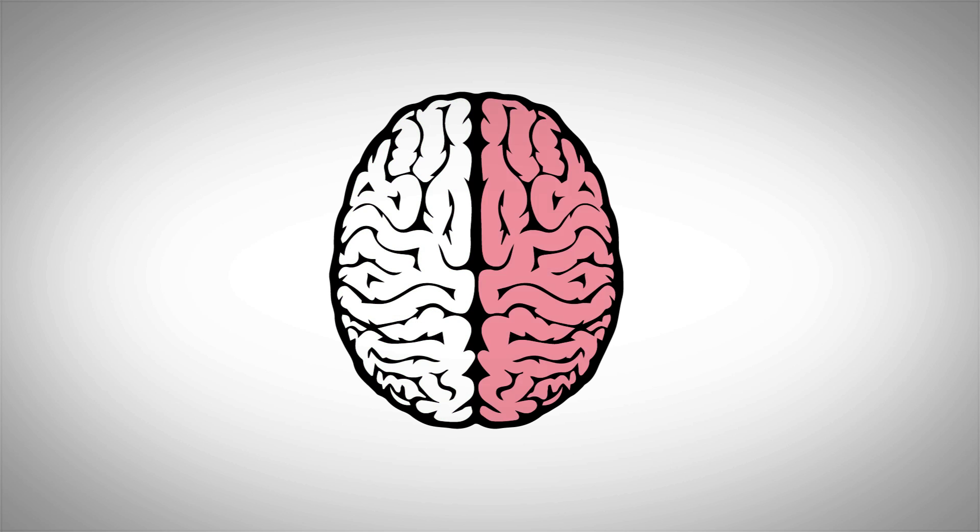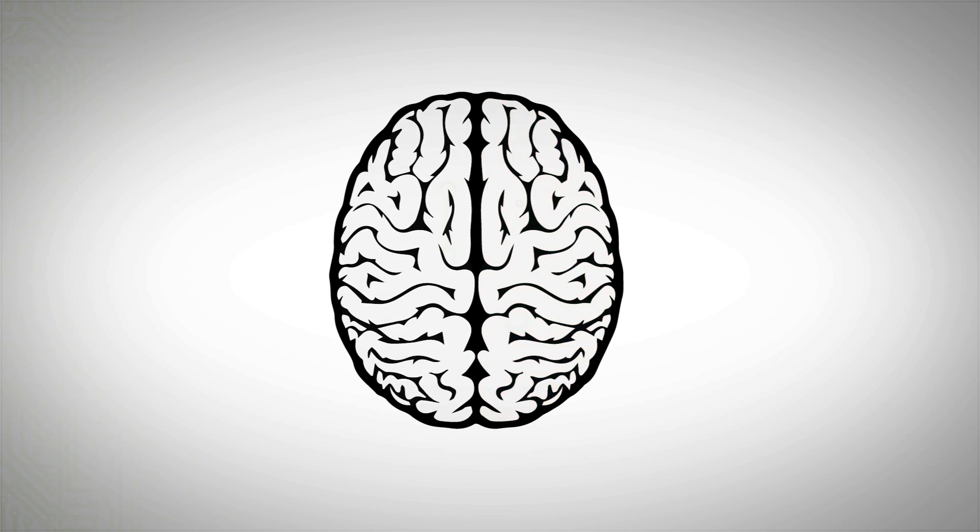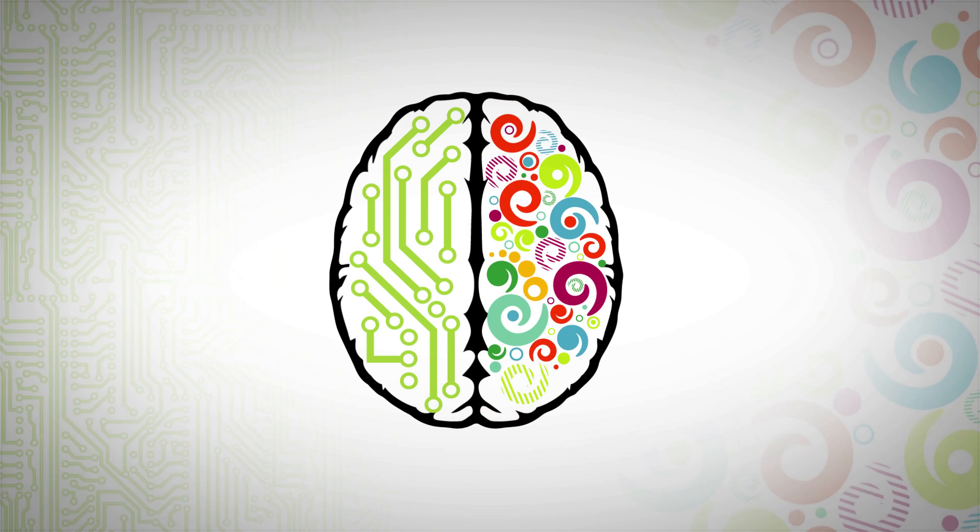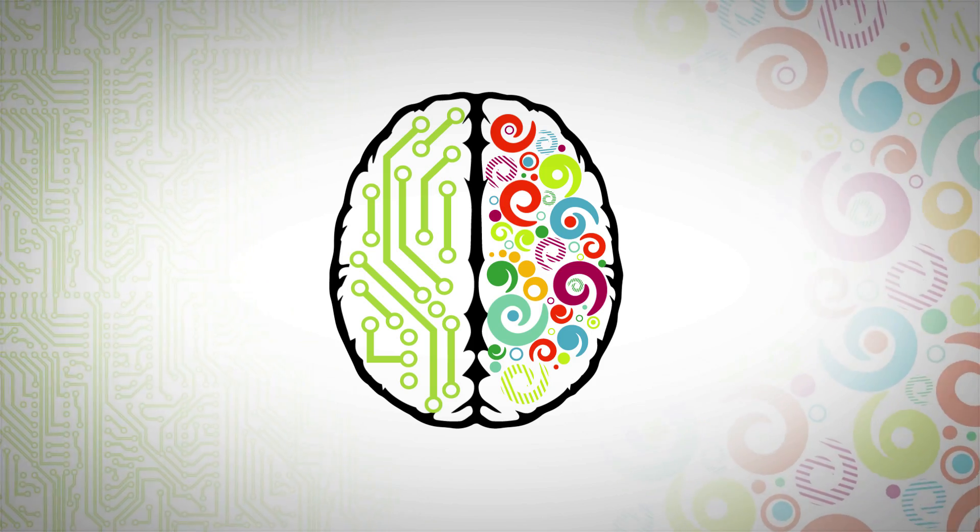The brain consists of two separate hemispheres that work together but process information quite differently. Generally, the left side of the brain processes logical information, while the right side is responsible for creative thinking.